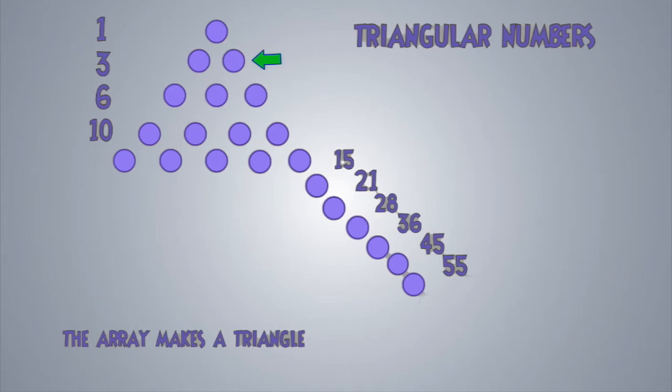The next one, add 2 below it, forming a triangle. 1 plus 2 equals 3. On the left hand side, 3 is our next triangular number.